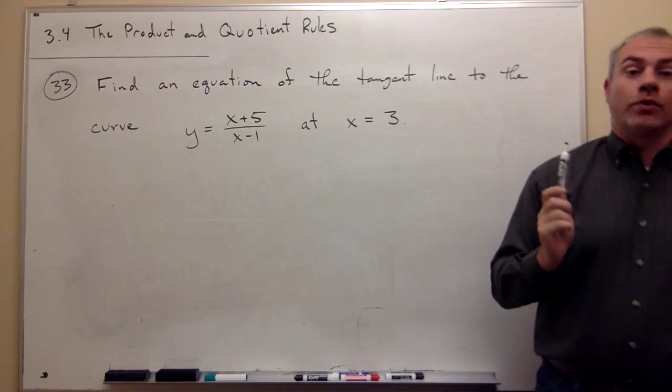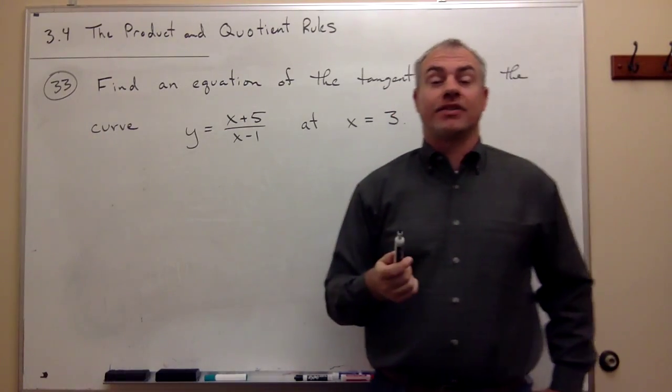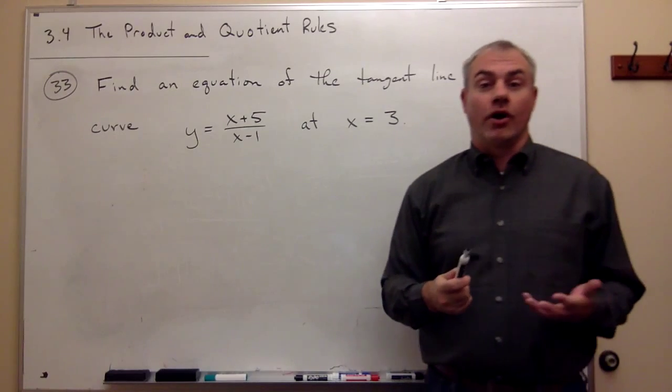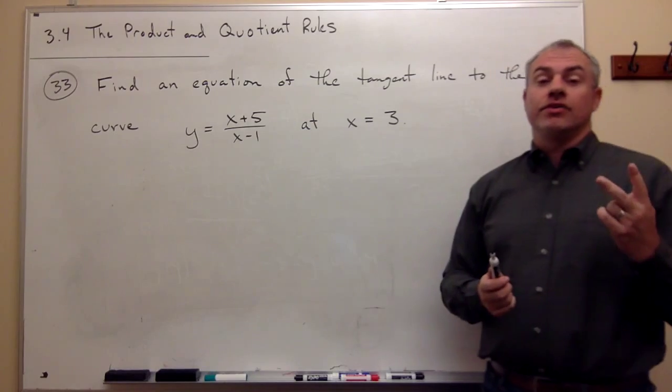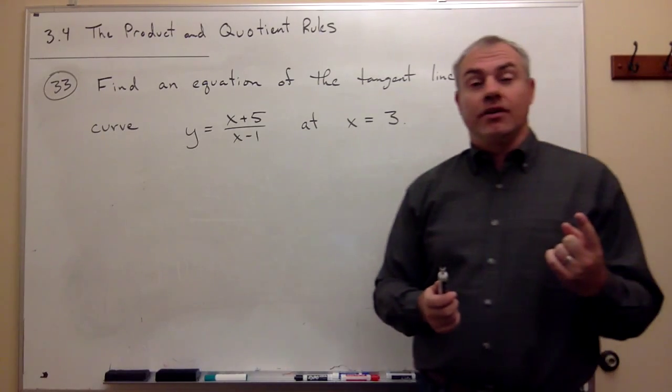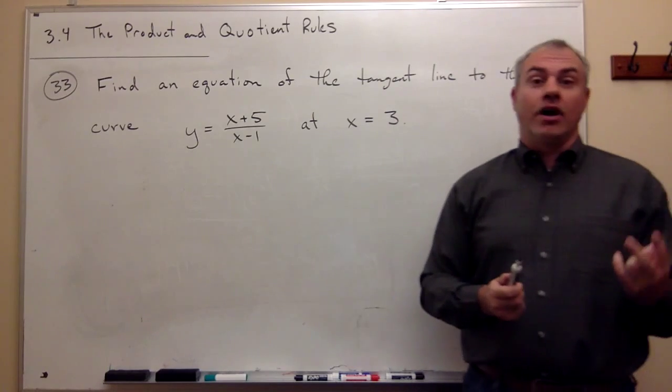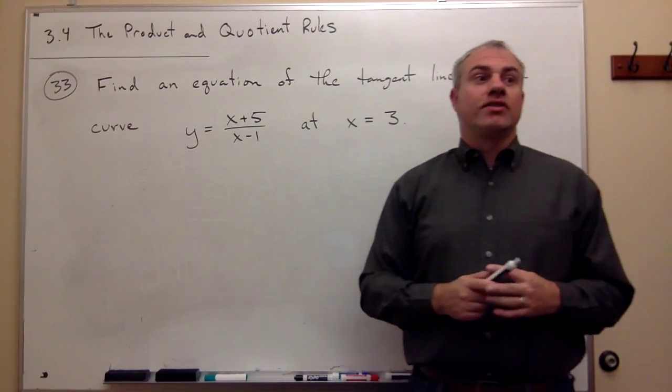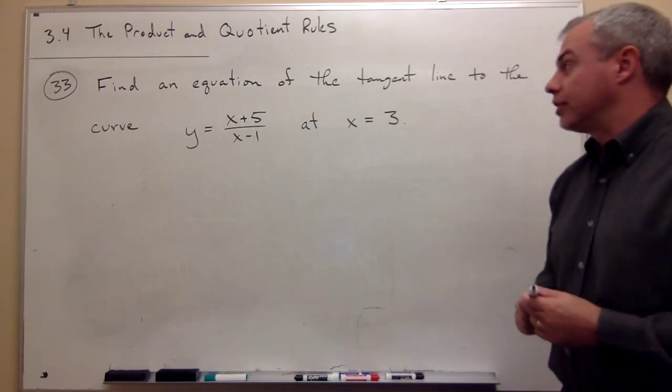Now, when we're trying to find the equation of the tangent line, we always have to just go back to the basics. What do we need to know to find the equation of a line? You need two things: a point that is on that line, and you need the slope of the line at that point. So if you know a point and you know a slope, then you can figure out the equation of the line.